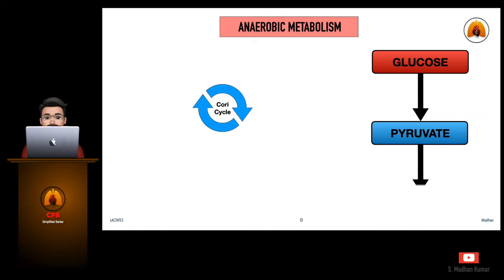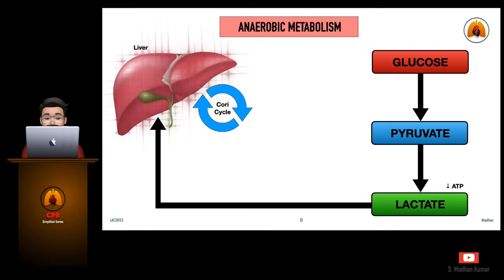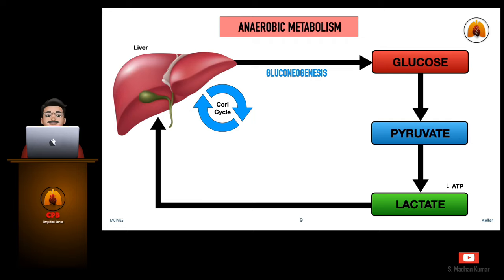In anaerobic metabolism, in the absence of oxygen, pyruvate takes the anaerobic pathway and gets converted to lactate, producing only 2 ATPs. The produced lactate enters the liver where, through the Cori cycle, lactate is converted into glucose again — a process called gluconeogenesis.